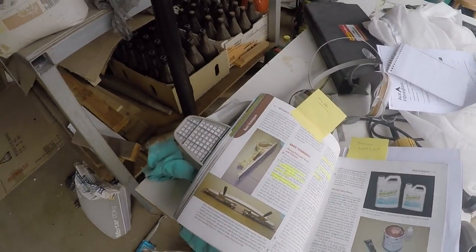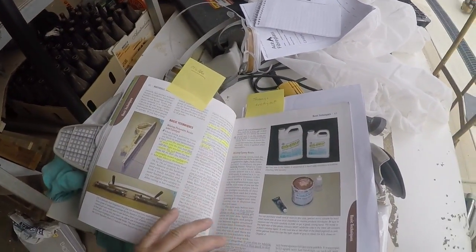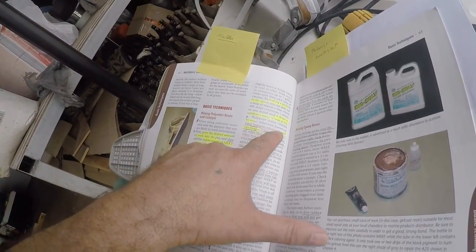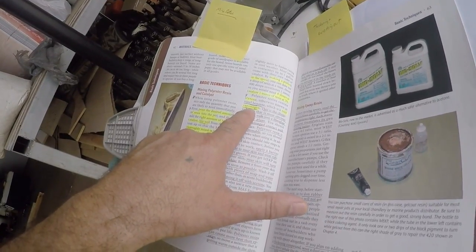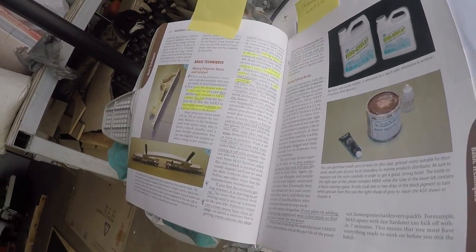It says here polyresins contain styrene, otherwise known as vinyl benzene, which is a mold cast ingredient. That's why we wear a mask.